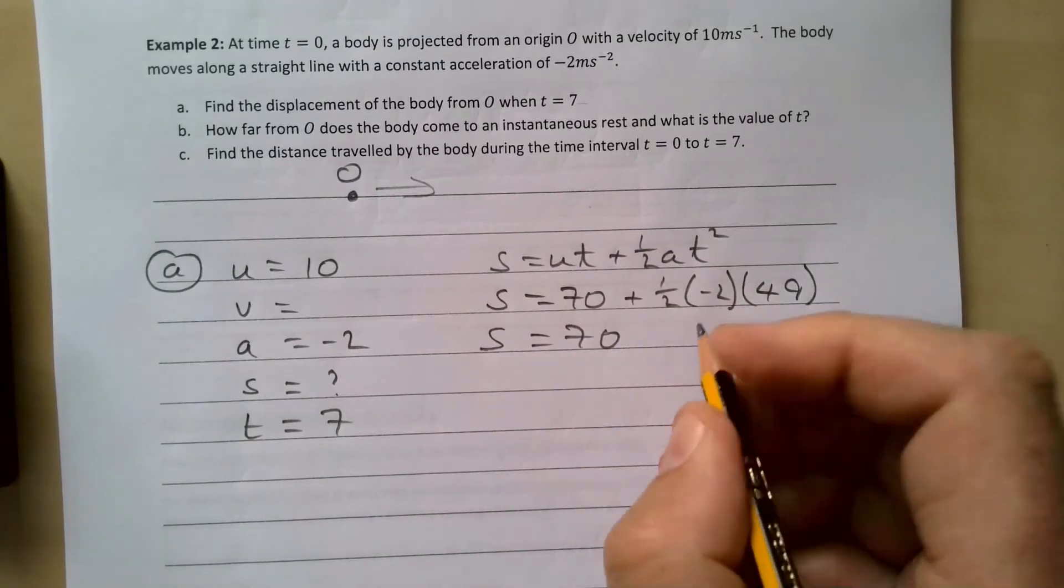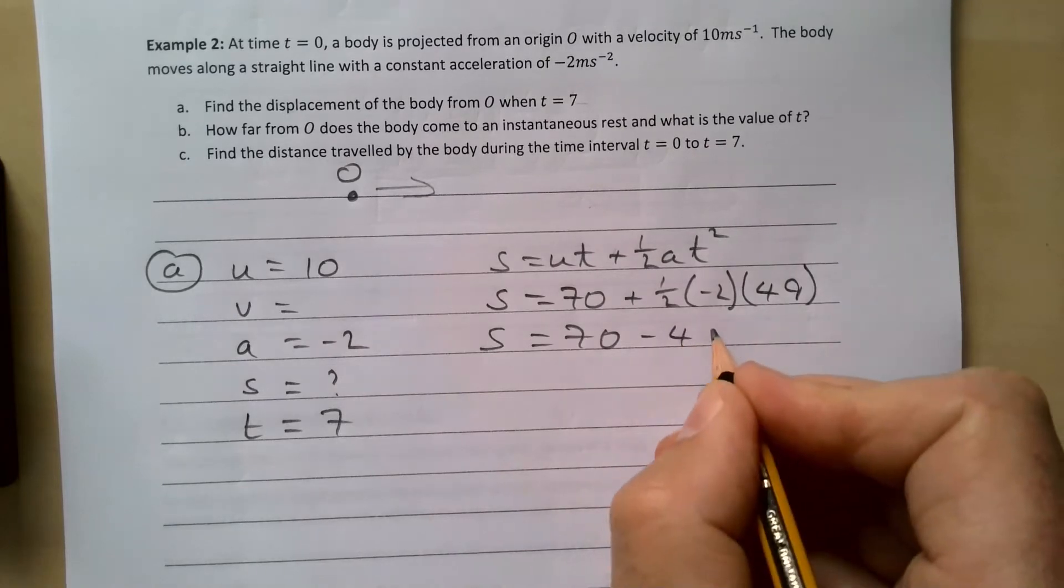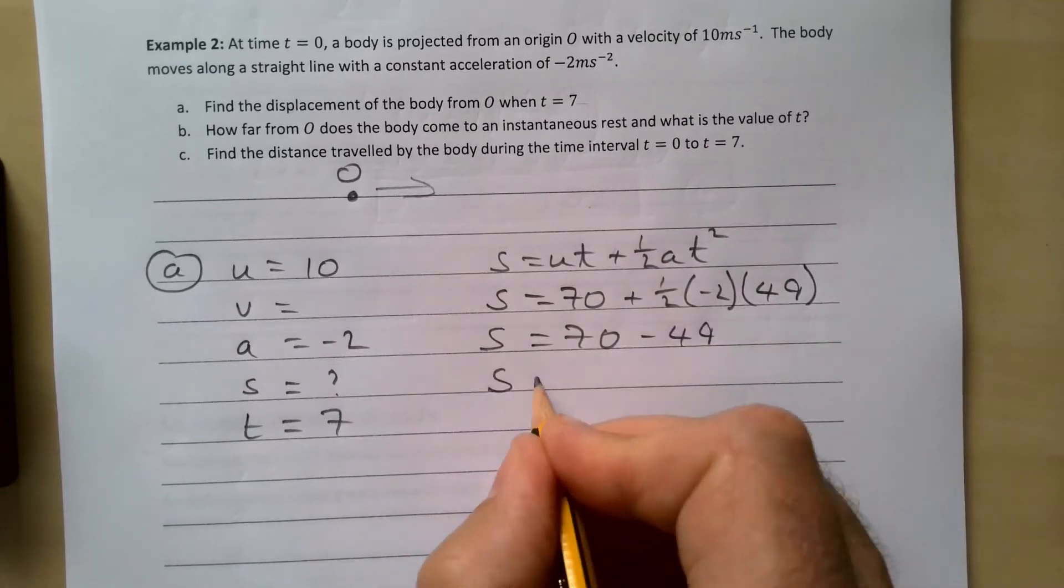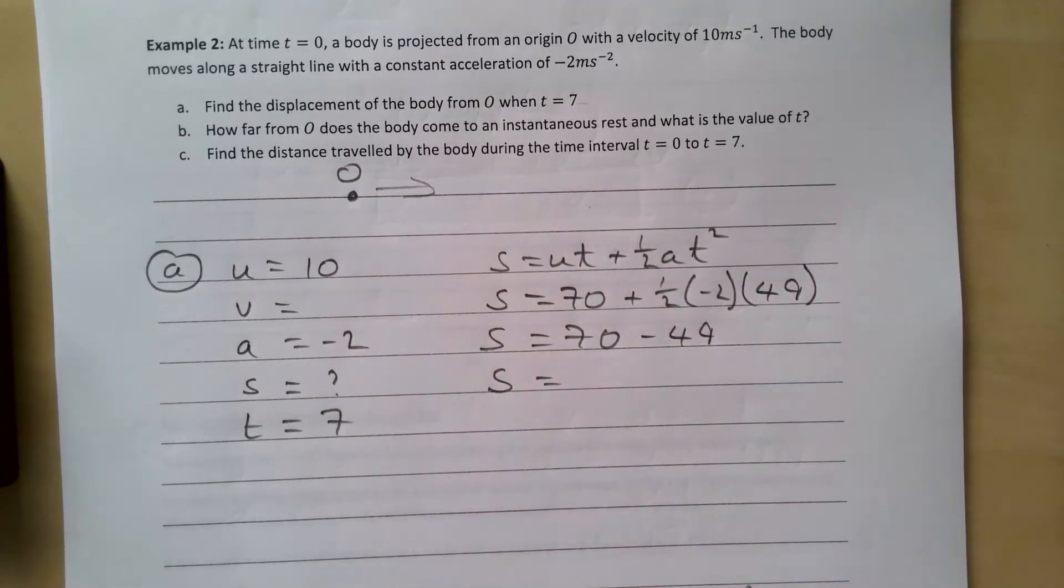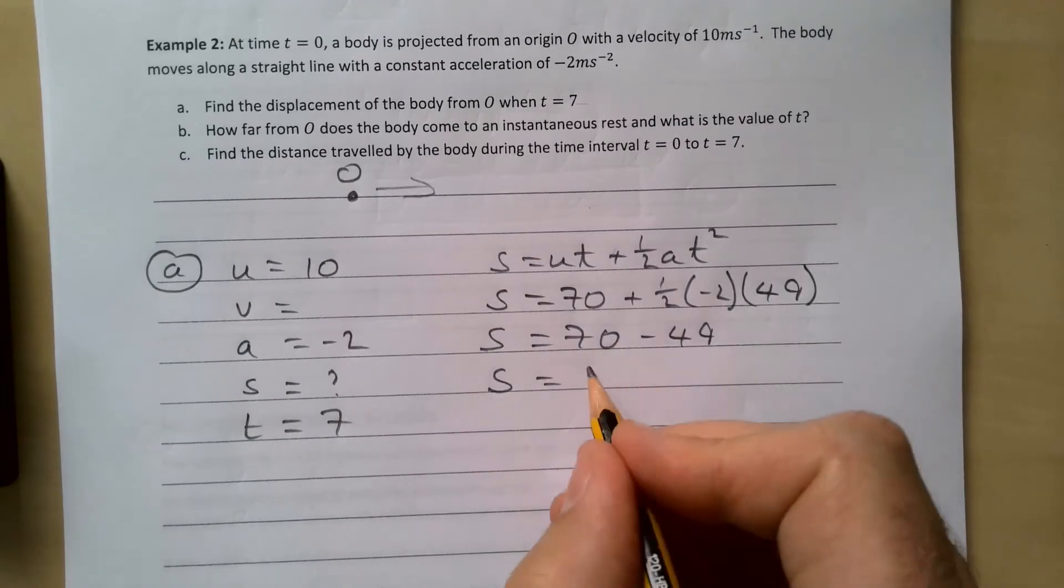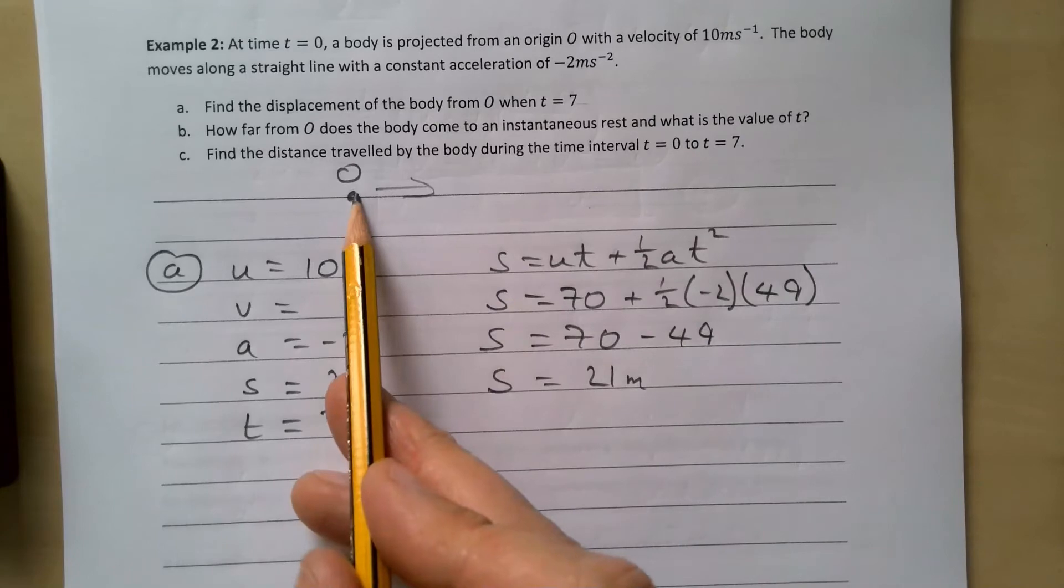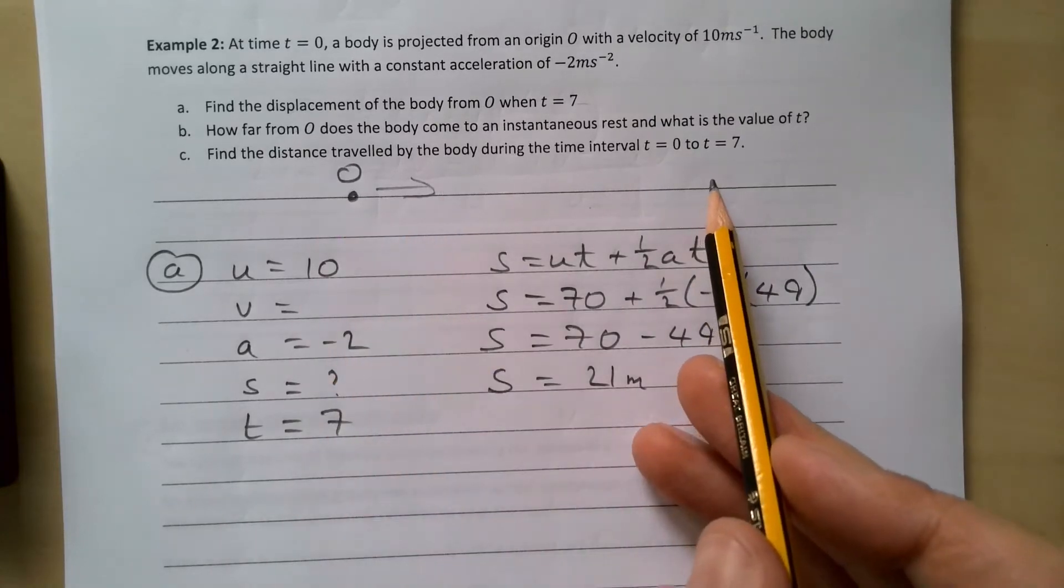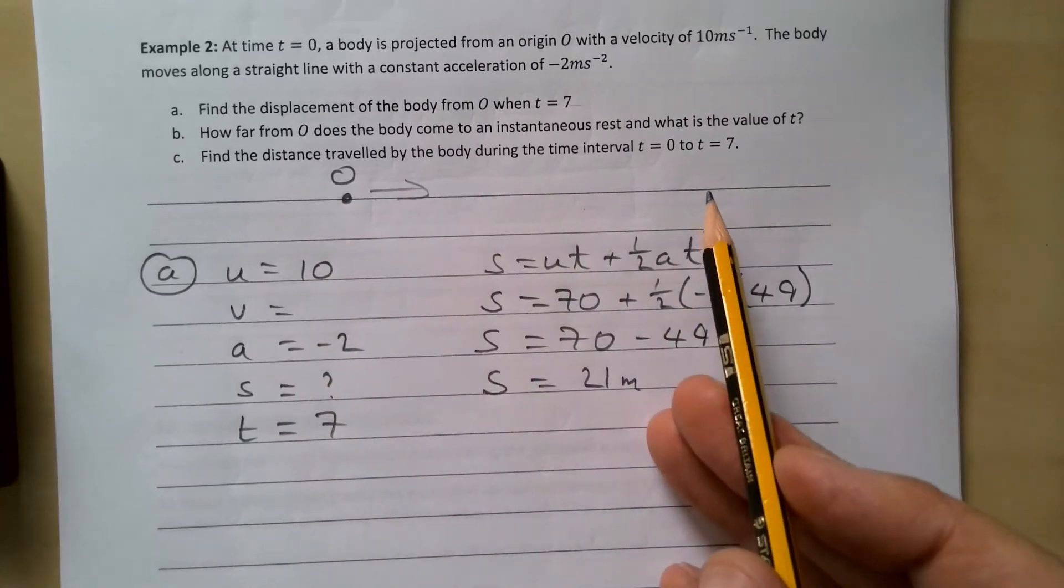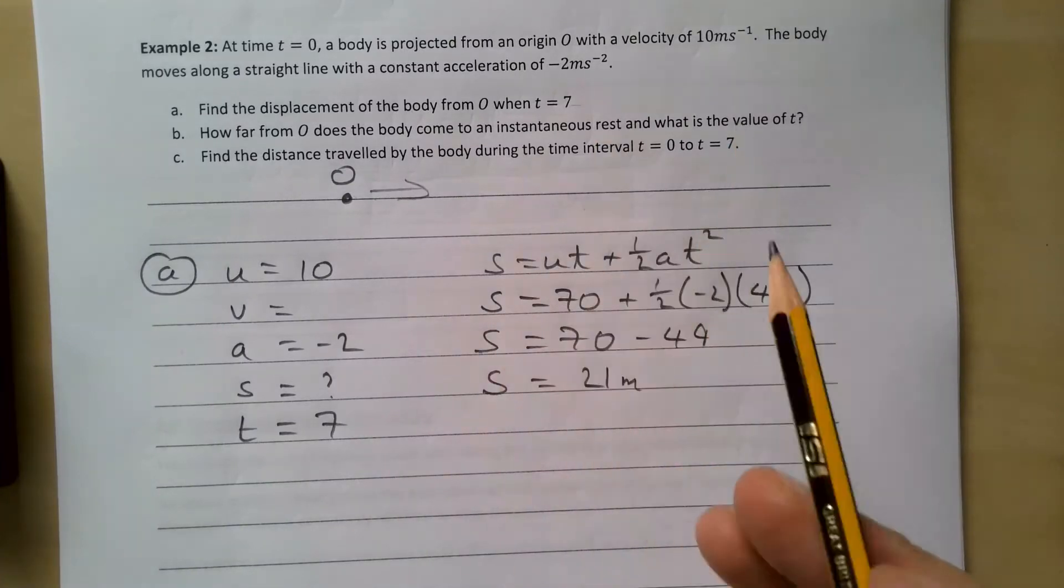So s is 70 take away 49. Our displacement then after seven seconds, 70 take away 49 is going to be 21 meters. So that means after seven seconds we are 21 meters from here. I hope you can spot that was quite hard to see that, but that's where we're going.